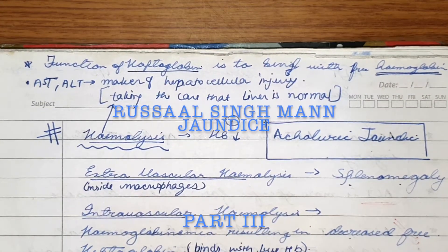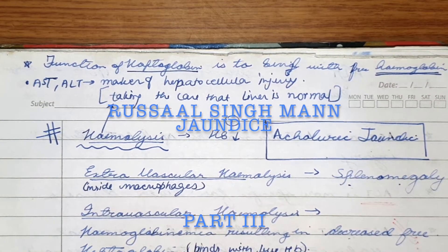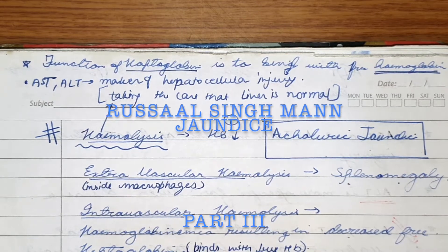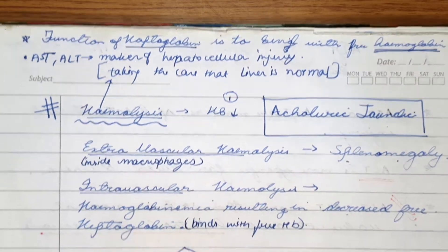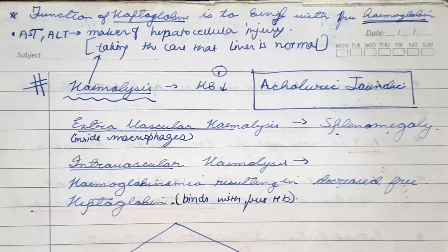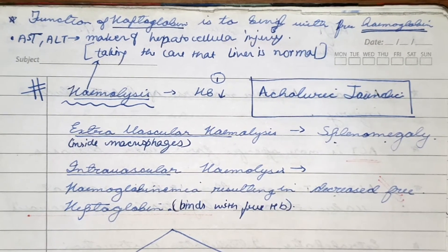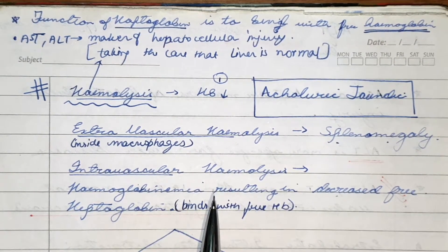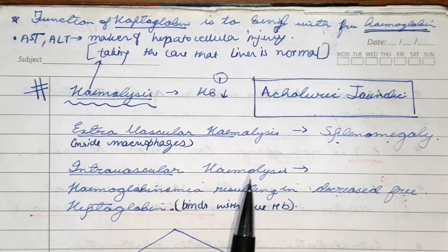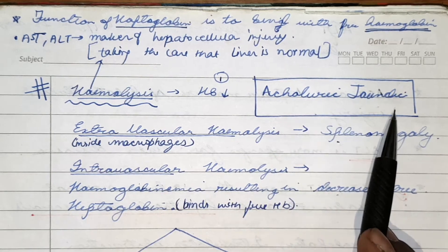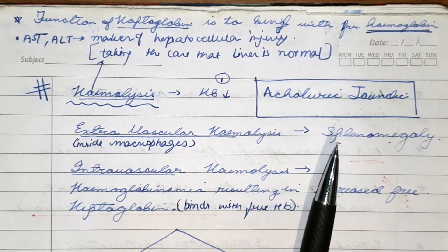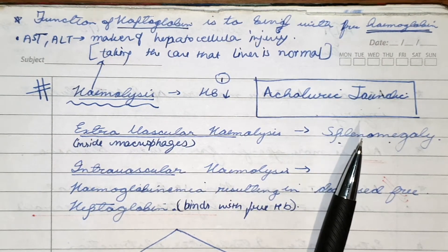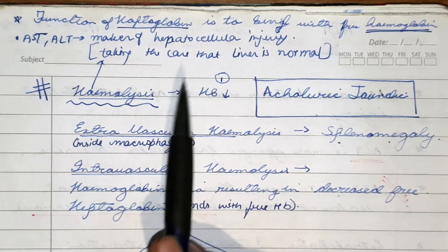We'll talk about the third and last part of the series about the biological and biochemical changes that take place in the blood because of different types of jaundice. First, let's talk about jaundice caused by hemolysis. We also call it acholuric jaundice because in this type, bilirubin is not seen in the urine.